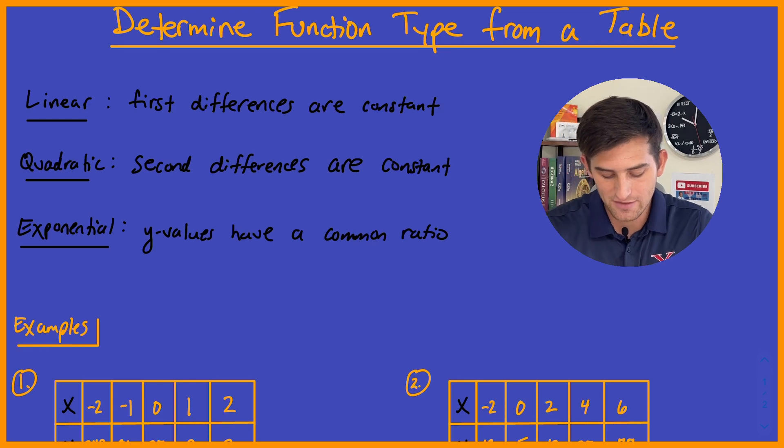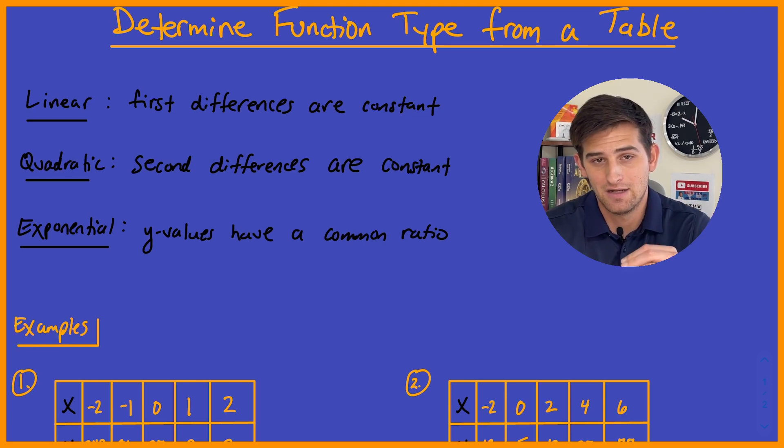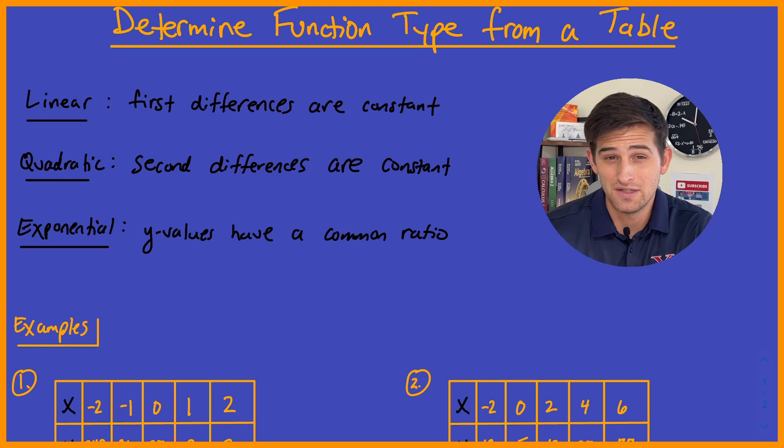And now for exponential, our y values have a common ratio. So in that case, we are multiplying by a number to go from one y value to the next. Even if it looks like our y values are decreasing, we want to say we're multiplying by a fraction rather than dividing. So if it looks like we're dividing by four, we're going to say we're actually multiplying by one-fourth. For exponential, we want to focus on that constant factor that we're multiplying by rather than dividing.